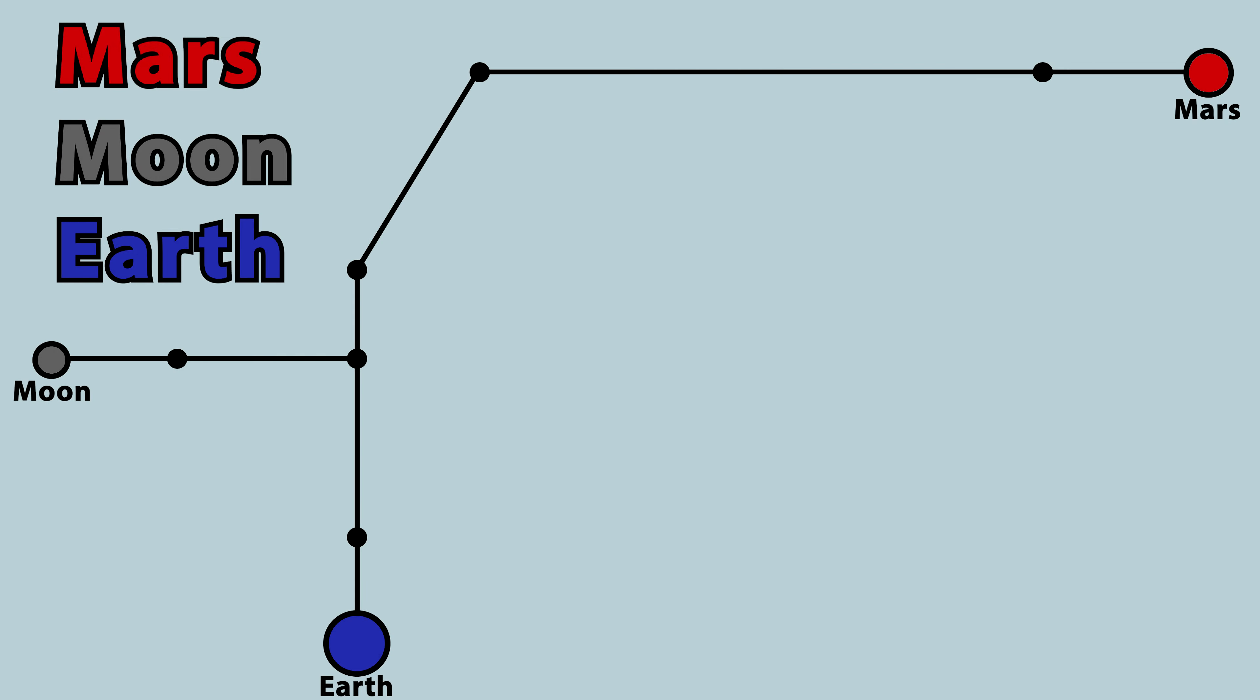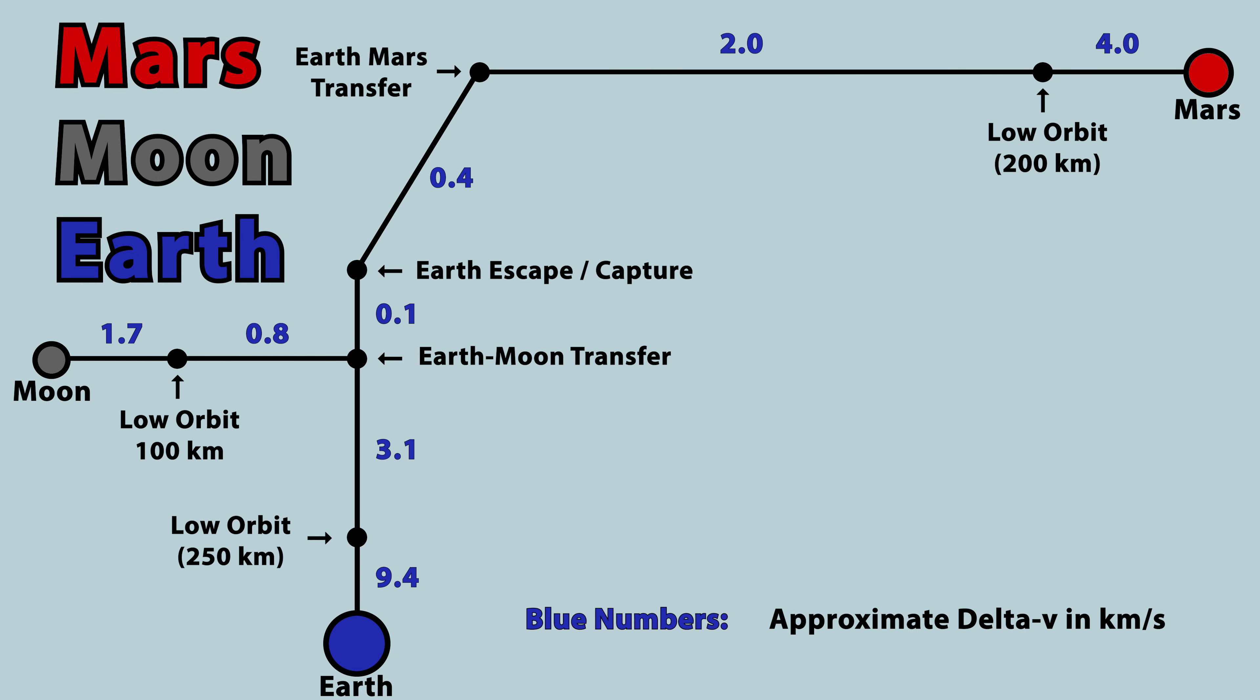When fully fueled in low Earth orbit, with 100 metric tons of cargo, Starship only has a delta-v potential of 6.9 kilometers per second. So since Mars requires 9.6 kilometers per second, how is Starship supposed to get to Mars?